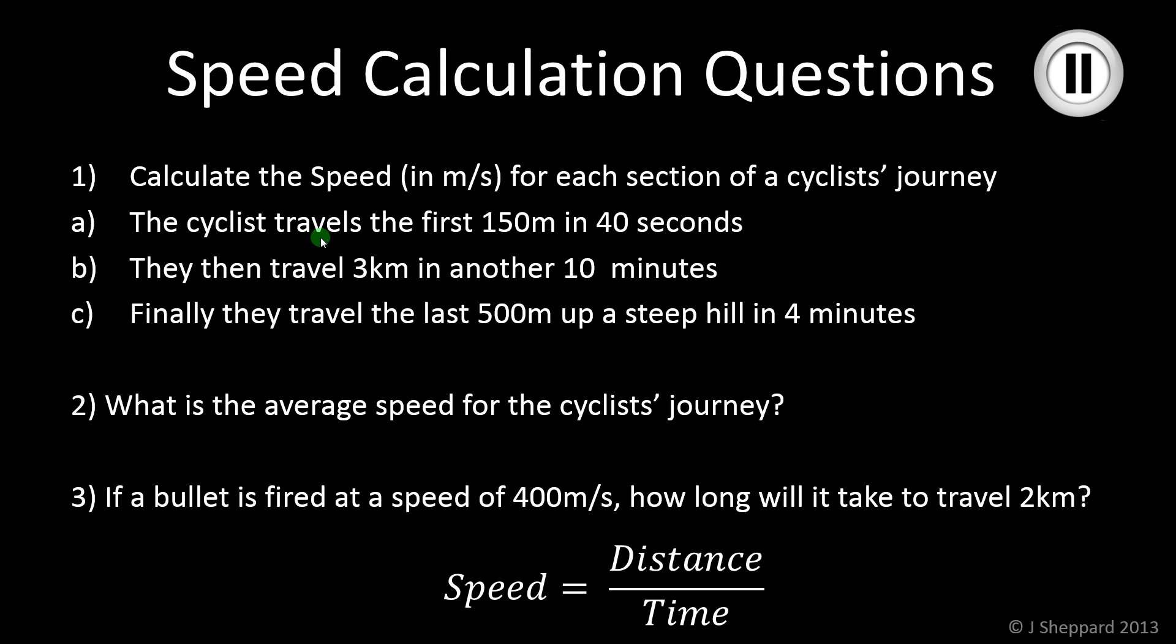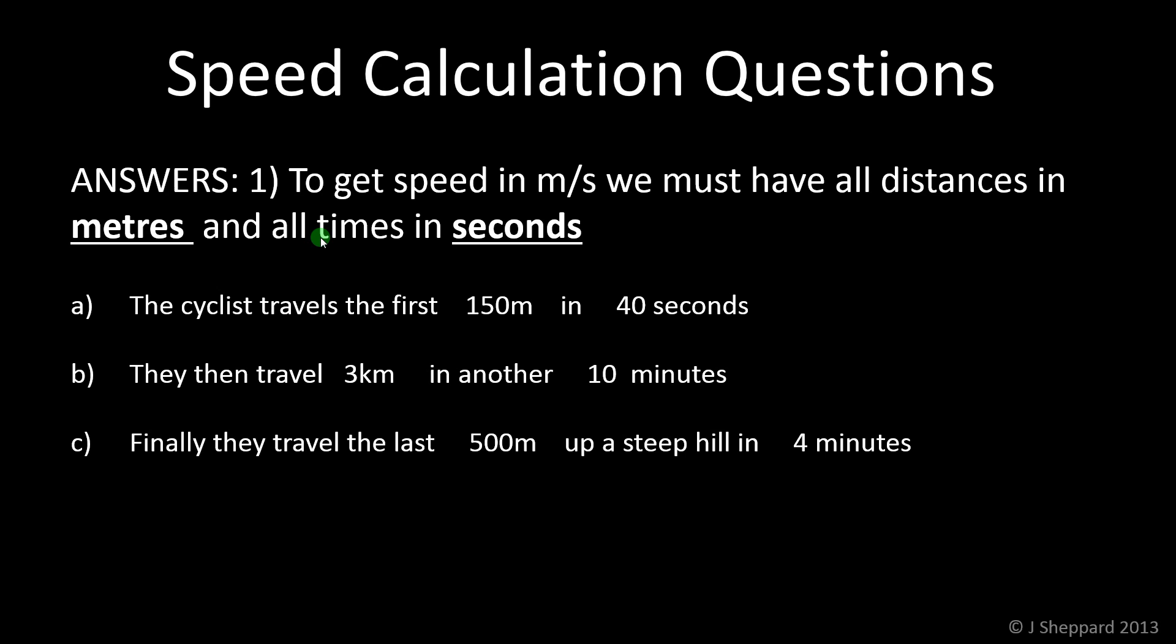Let's have a look at these then. Some speed calculations. Number one first of all. We should note that units are important. So to get a speed in meters per second, which we've been asked for, we have to have all the distances in meters and all the times in seconds. So, what I've got here is the red dotted underlines are going to be units that need to be changed and the green ones are correct.